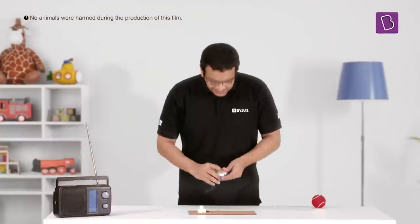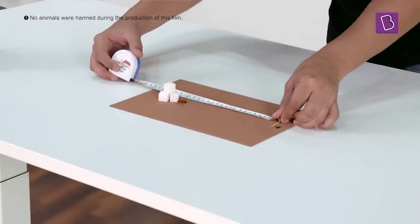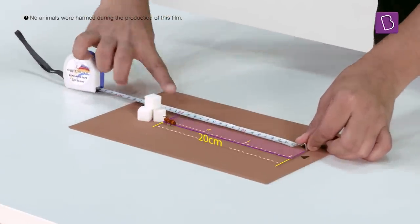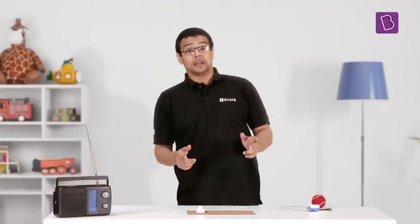To be more precise, I could use a measuring tape to measure the distance between the starting point and the sugar cubes, which is 20 centimeters. So the ant was one centimeter in size. Interesting.